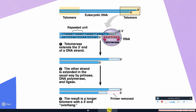This is where telomerase comes in. It fixes this shortening problem by adding TTAGGG sequences to the 3' end of the telomere parental strand, which are then synthesized by DNA polymerase. This allows for a complete copy of DNA to be made during lagging strand synthesis.